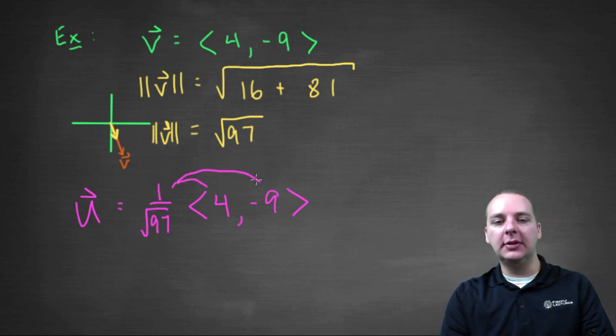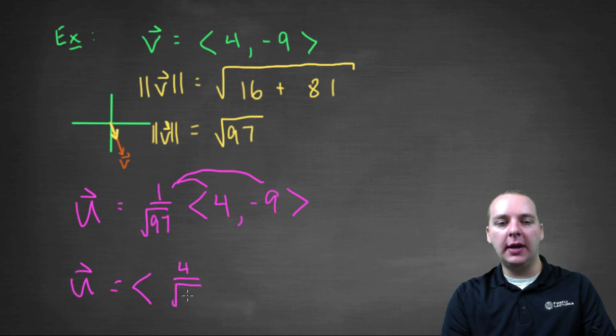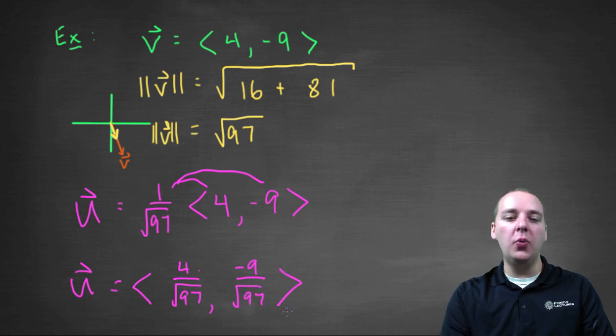And then we're just going to distribute this guy through, and our final answer for vector u would be four over root ninety-seven comma negative nine over root ninety-seven. That seems a little weird, but these unit vectors often look this way, they often look a little crazy.